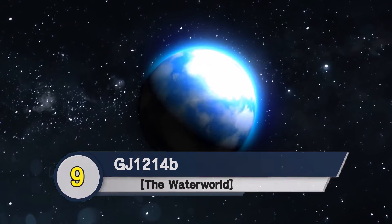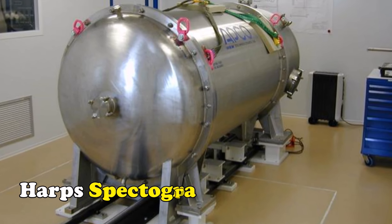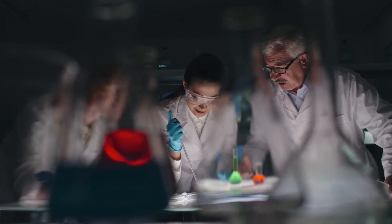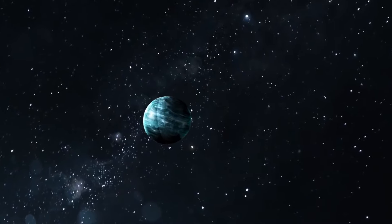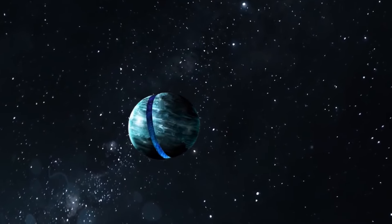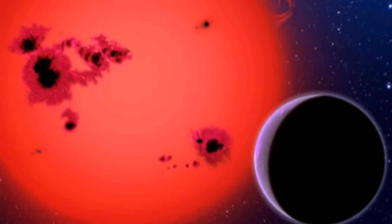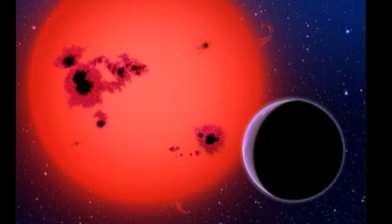GJ1214b, the Waterworld. First discovered by the M-Earth project and further probed by the HARPS spectrograph, GJ1214b orbits the star at about 40 light-years away from us. Scientists say it's the first super-Earth around which an atmosphere has been found and only the second super-Earth exoplanet with a defined mass and radius.